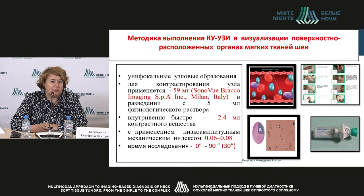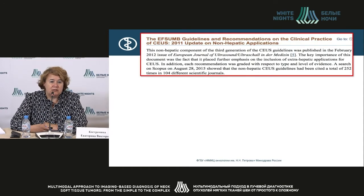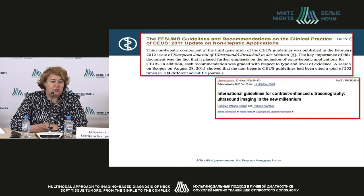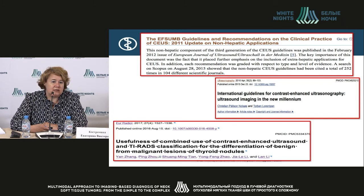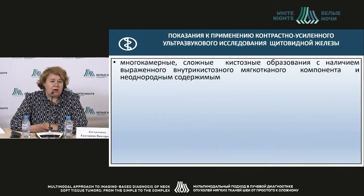Contrast-enhanced ultrasound (CEUS) is used only for single non-focal nodes. We used Abraca, a company preparation contrast solution with a low-amplitude mechanical index. The research time covered the first 30 seconds and then up to 90 seconds. After guidelines were issued in 2018, a number of articles appeared explaining thyroid node assessment, and several showed that the combination of CEUS and elastography is effective for diagnosis.